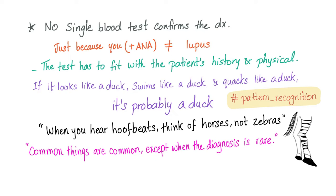As you recall, there is no single blood test that confirms the diagnosis in rheumatology. This is not like a bone marrow biopsy. Just because you have a positive ANA doesn't necessarily mean that you have lupus. The test has to fit with the patient's history and physical exam. If it looks like a duck, swims like a duck, quacks like a duck — it's probably a duck. This is called pattern recognition.